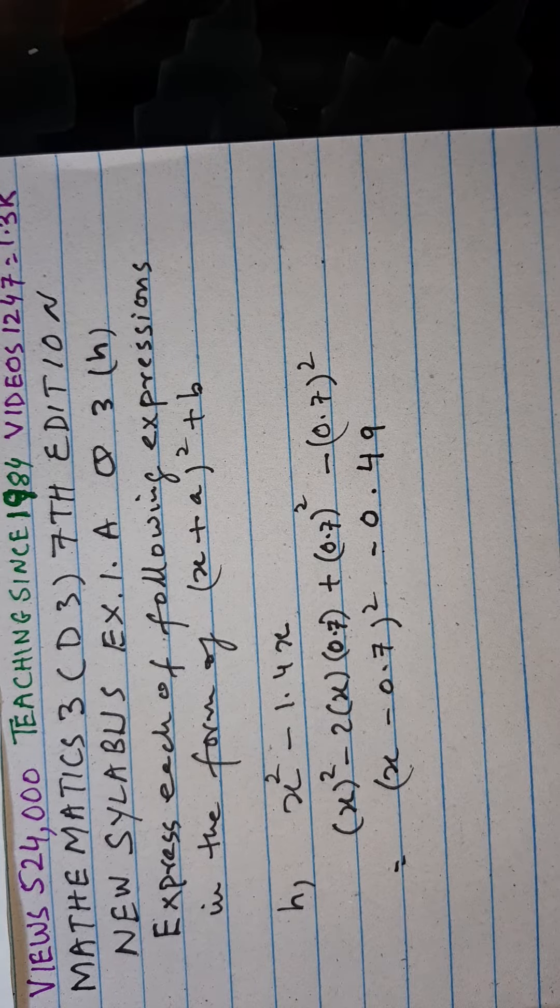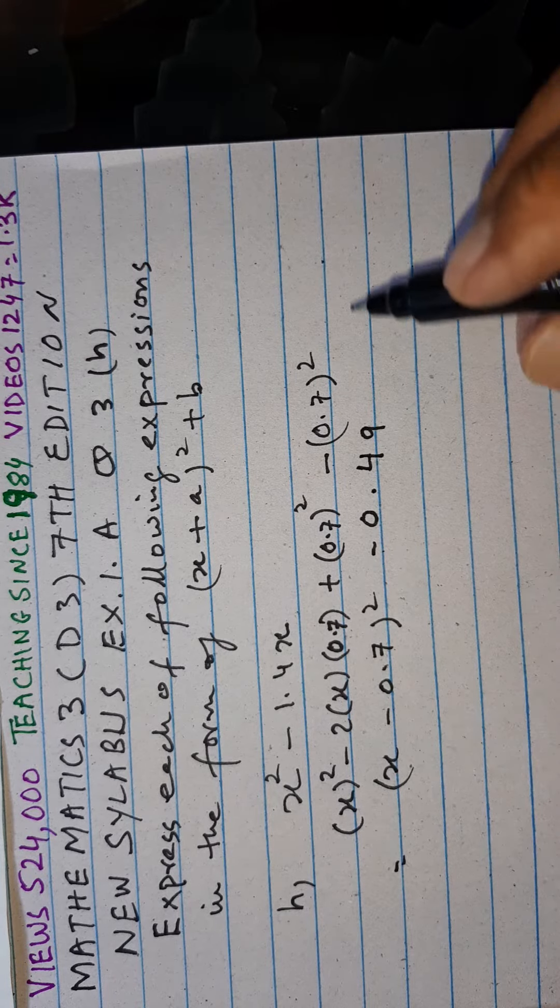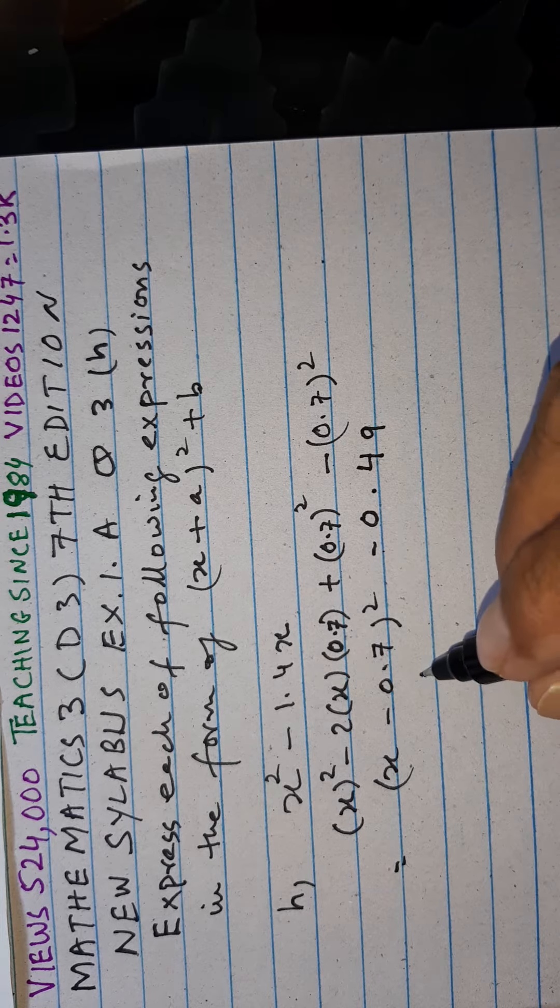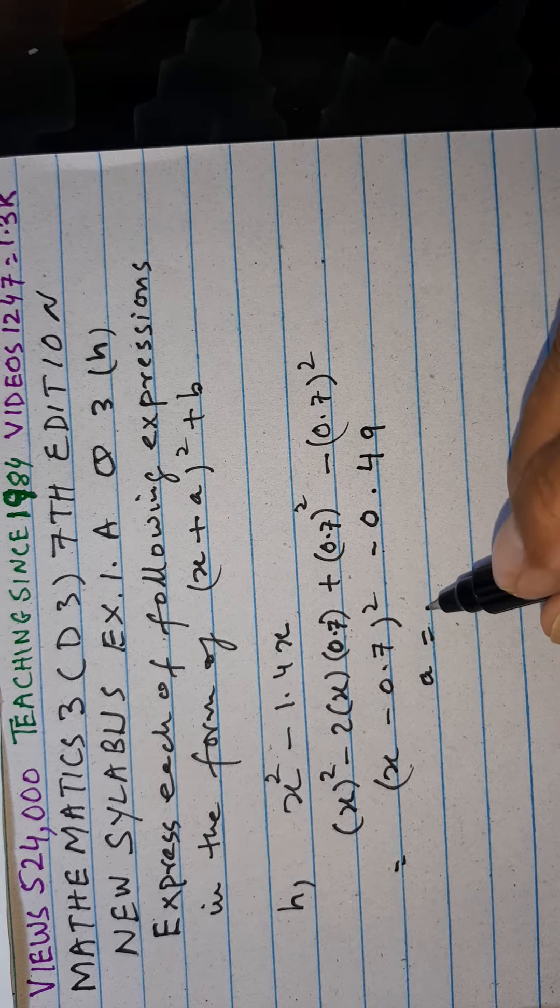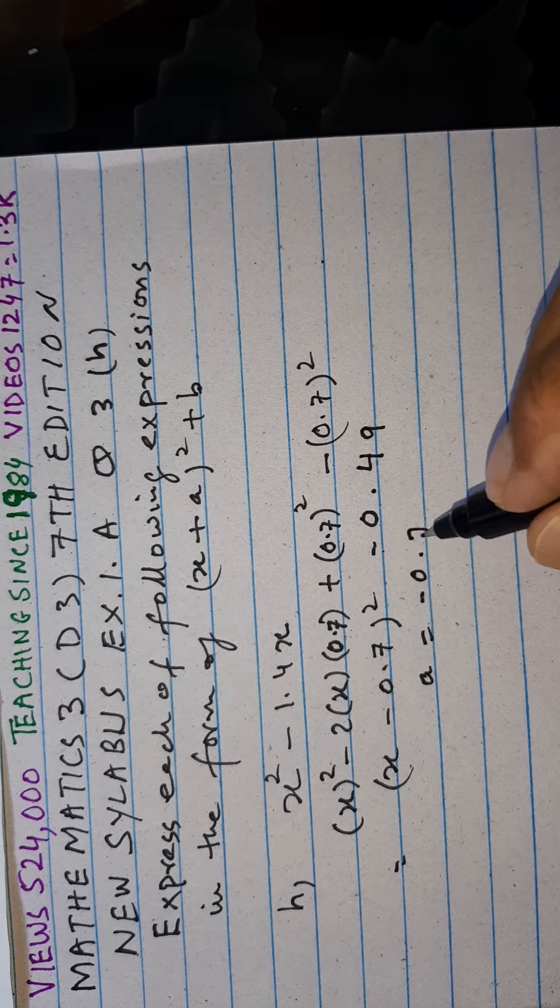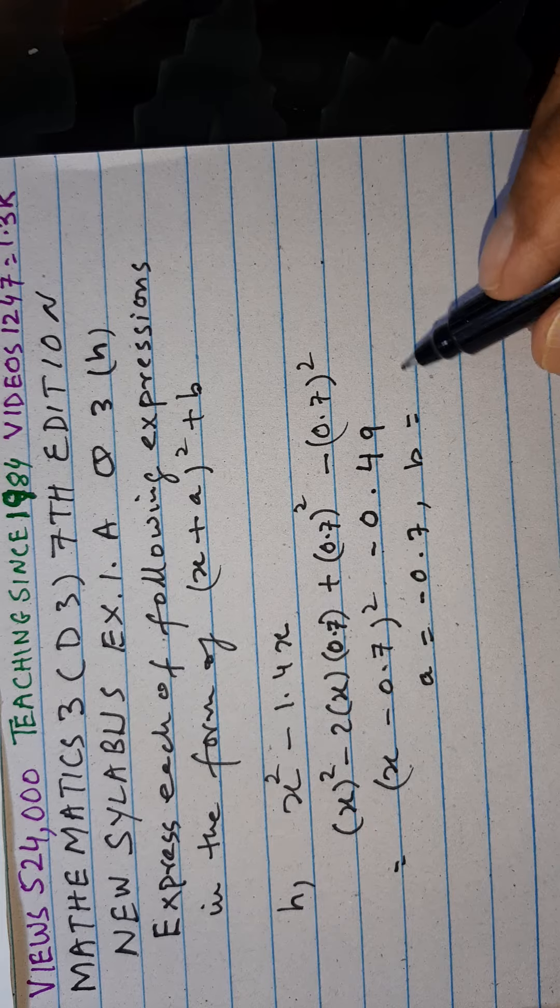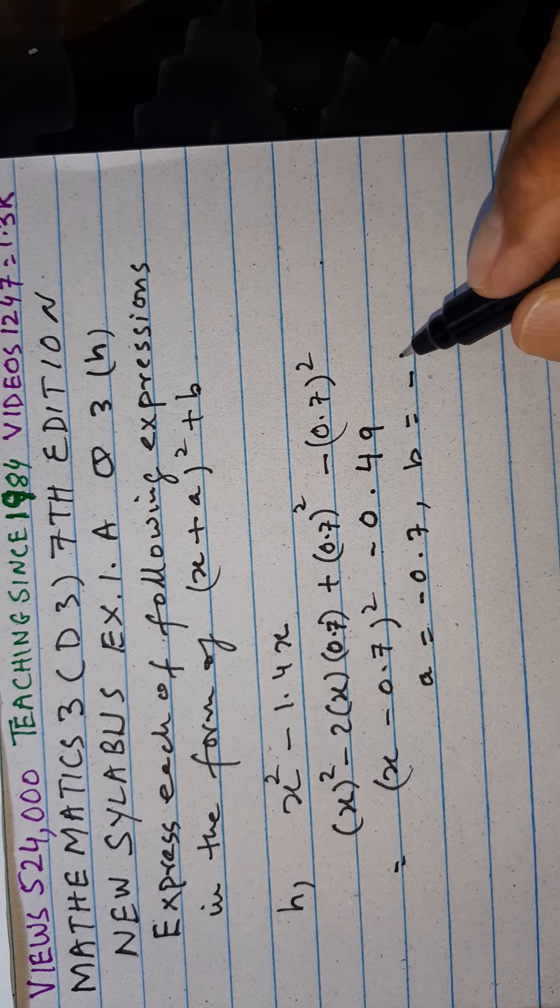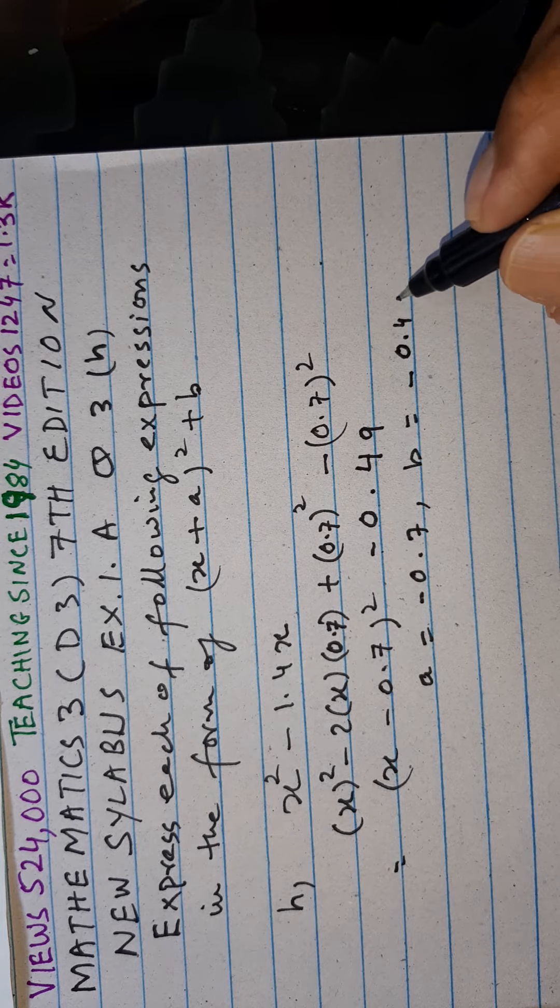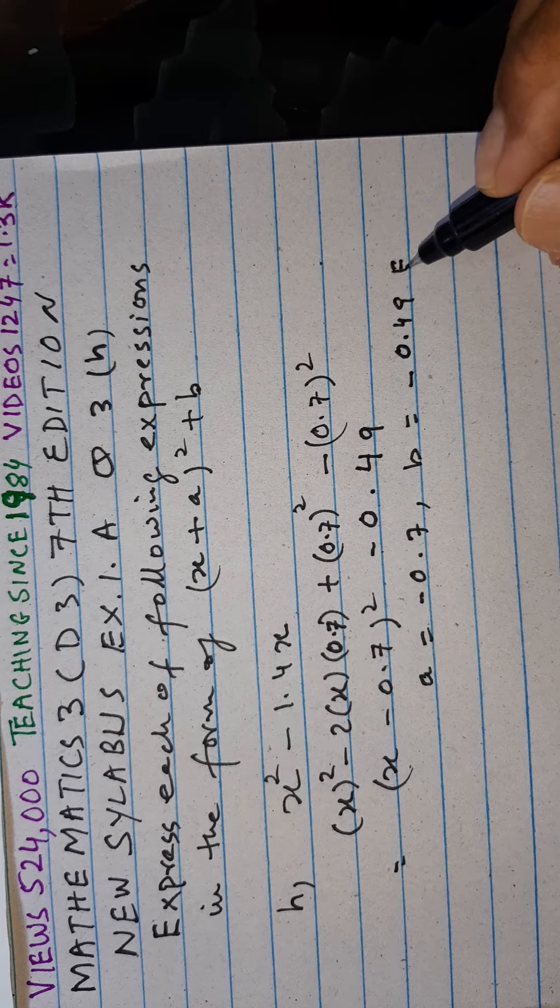This is our required form. A is equal to minus 0.7 and B is equal to minus 0.49. This is extra work.